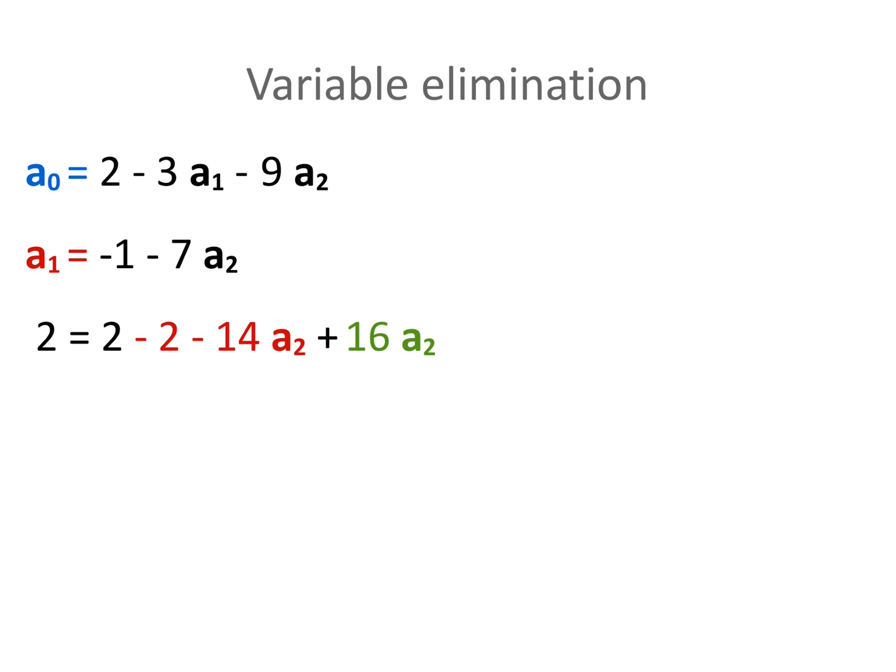To reduce further, 2 minus 2 is 0, and minus 14 plus 16 means 2 times a2. So the last equation is simply 2 equals 2 times a2. This then tells us that a2 has to be equal to 1.